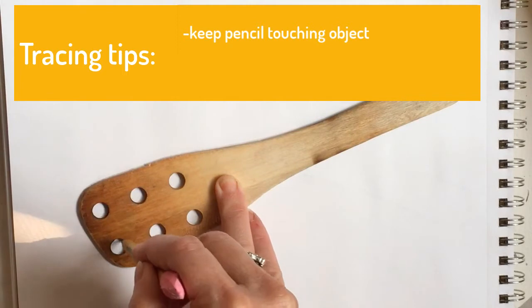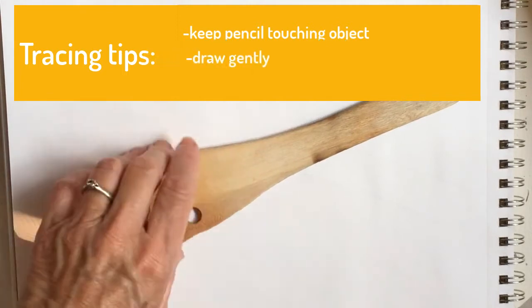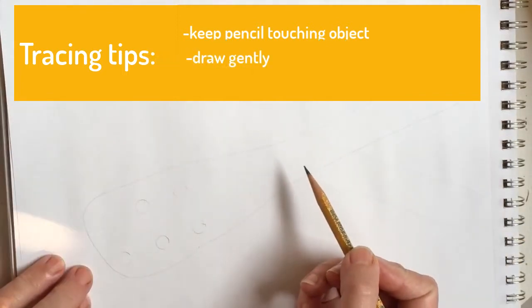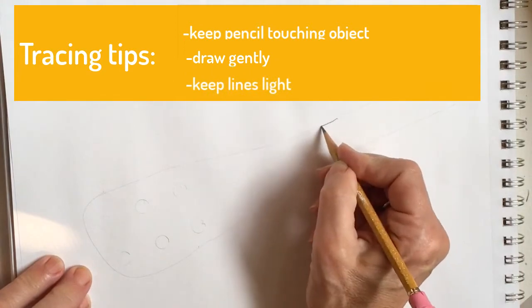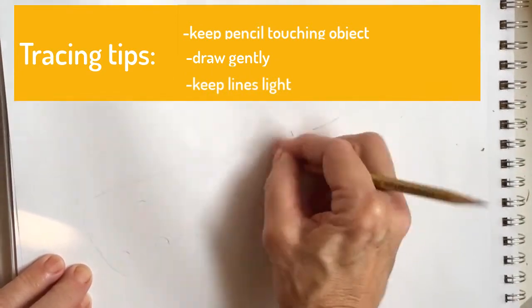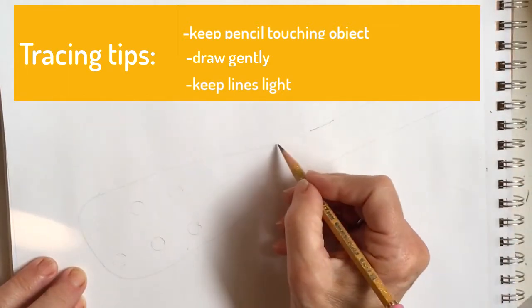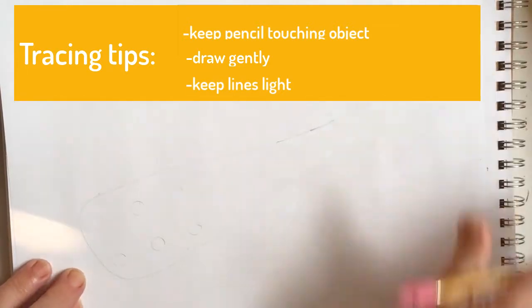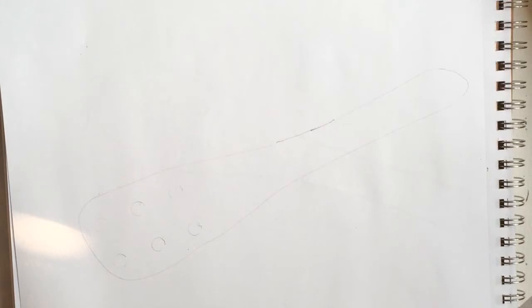Try not to press too hard. Try to keep your lines very light. Look what happens when I press harder and try to erase it. The line doesn't really go away. Pressing lightly is difficult though. So don't worry if you're having a hard time and it still comes out dark. It really takes a lot of practice to learn to draw lightly.